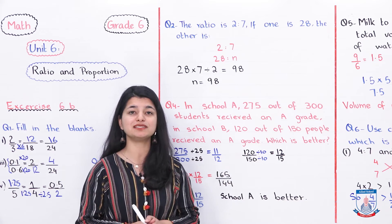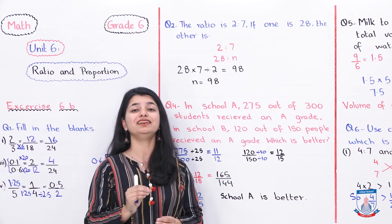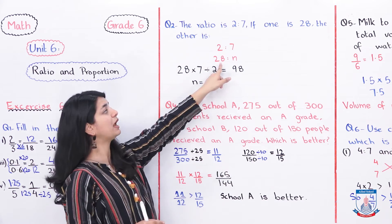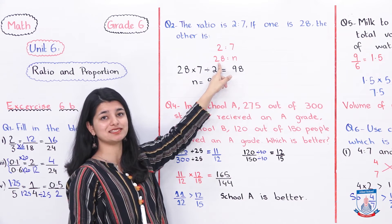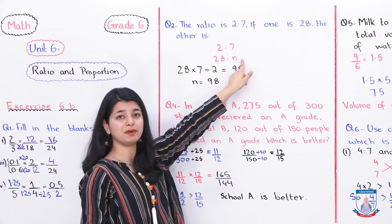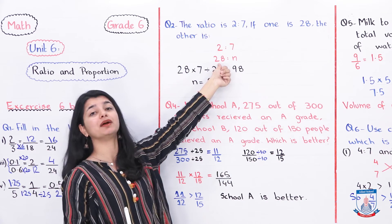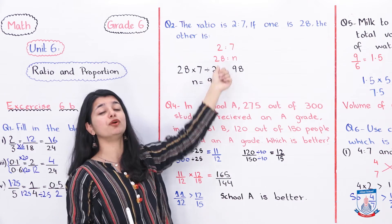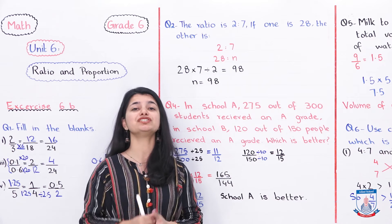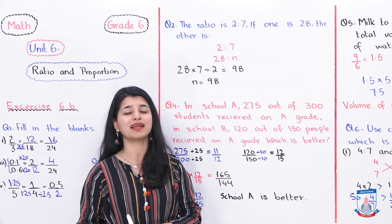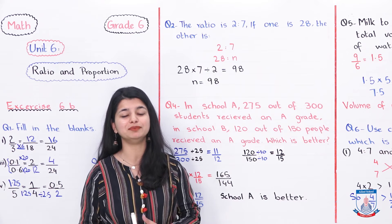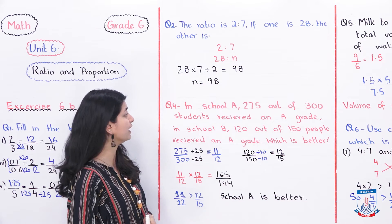This was question number 2. Question number 3 you have to attempt in exactly the same way. There's a slight difference that they have given you the larger number. Here they gave you the first value, so you placed 28 here. But there they have given you the larger number, so you will place it on this side. And here will be your variable N, X, Y, whatever you want to name it, and then you will cross multiply. So do question number 3 and then I will wait for you to come back and then we will start question number 4. I hope you are back from doing question number 3.